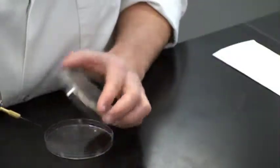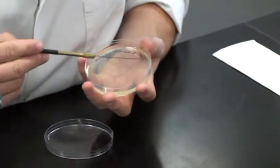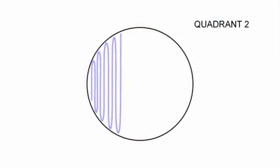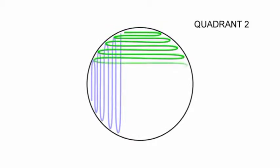Pick up the plate and rotate it a quarter turn to position it for quadrant two. In quadrant two, overlap the first three to four streaks with quadrant one to pick up bacteria. Then complete the remaining streaks with no overlaps.